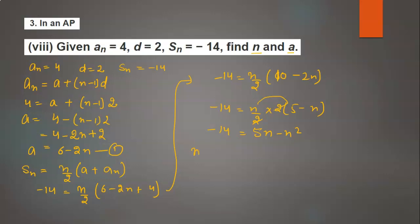Shift to left-hand side: n² - 5n - 14 = 0. Now middle term splitting, so we will get n²...